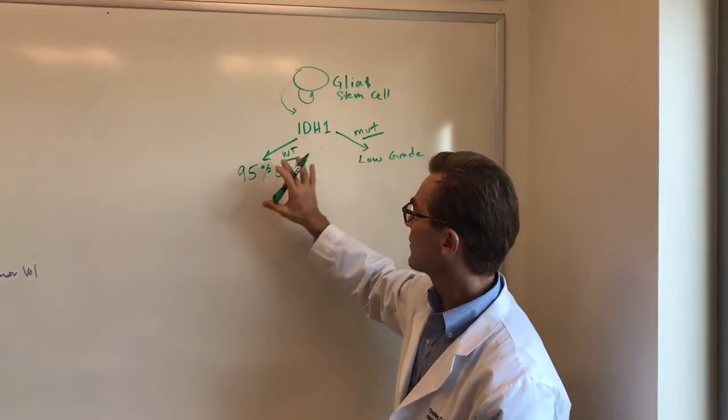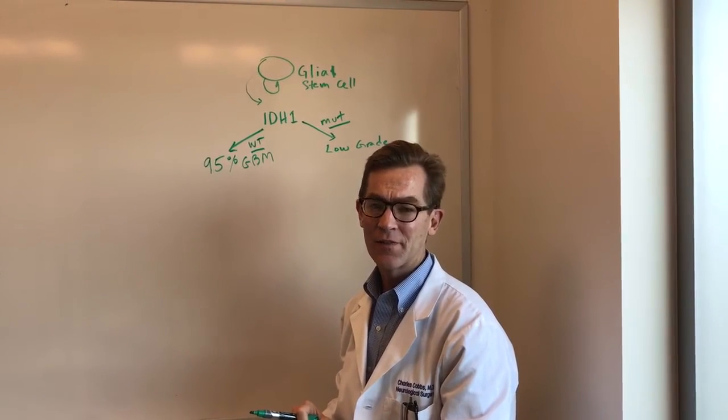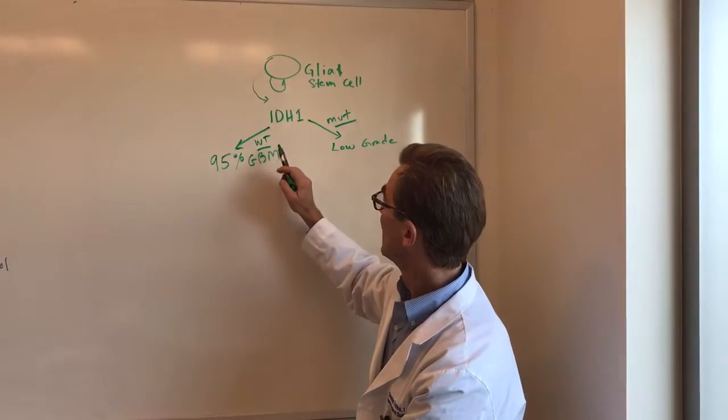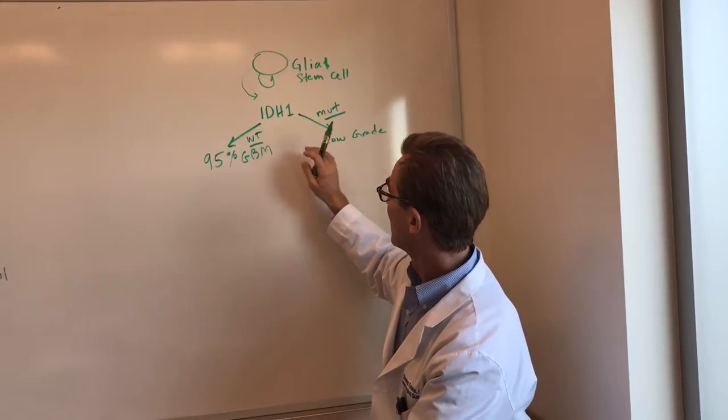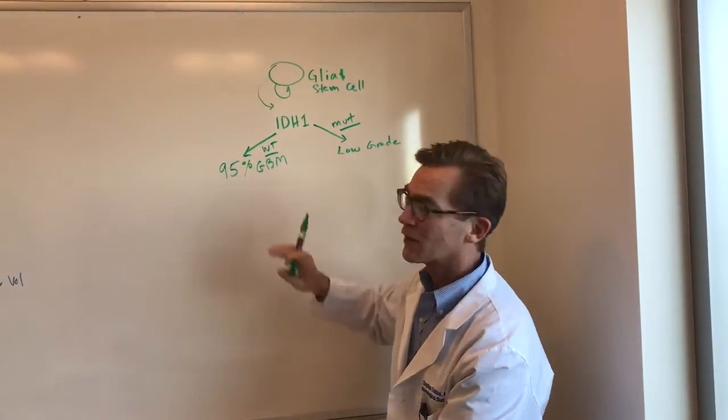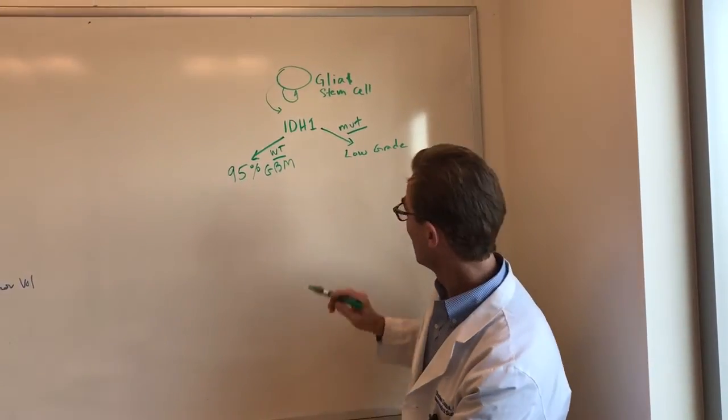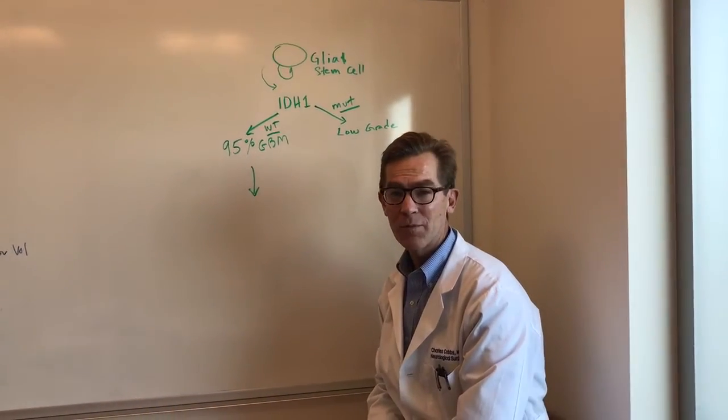So right off the bat, if a tumor looks the same under the microscope, but it's a wild type IDH1 gene, then that's not good, because we know even if it's IDH1 wild type, and let's say it looks like a low-grade tumor, then it's probably going to do poorly. A lot of these tumors will advance or progress rapidly.